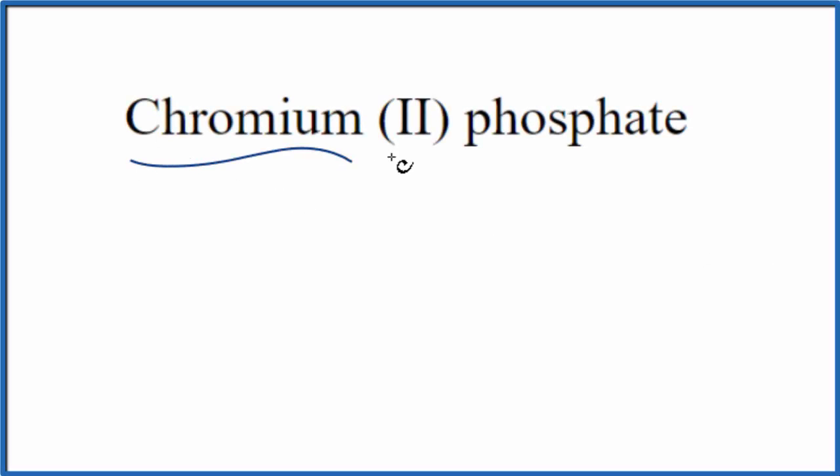To write the formula for chromium-2-phosphate, let's first write the element symbol for chromium. That's just C-R.